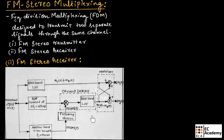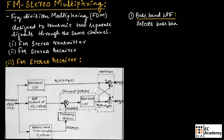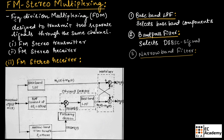Now let us understand the FM stereo receiver. This is the block diagram of the FM stereo receiver, which performs demultiplexing of the signal — the transmitter performed multiplexing, and the FM stereo receiver performs demultiplexing. The FM stereo receiver consists of three filters: a baseband low-pass filter, a band-pass filter, and a narrow-band filter. The baseband low-pass filter selects the baseband component, the band-pass filter selects the DSBSC signal, and the narrow-band filter selects the pilot carrier.